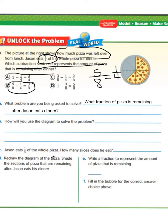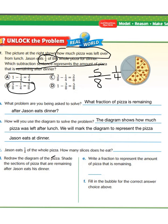How will we use the diagram to solve the problem? The diagram shows how much pizza was left after lunch — we counted 5 pieces out of 8 total slices. We will mark the diagram to represent the pizza Jason eats at dinner. Jason eats 1 fourth of the whole pizza — how many slices does he eat?